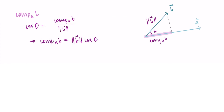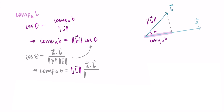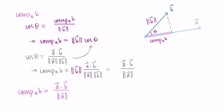Since cosine of theta equals the dot product of a and b divided by the magnitude of a times the magnitude of b, I substitute that in. The component of b along a equals the magnitude of b times (a·b) divided by (|a|·|b|). The magnitudes of b cancel, leaving a·b divided by |a|. This is the formula for the component of b along a, telling us how much of b is pointing in the direction of a.